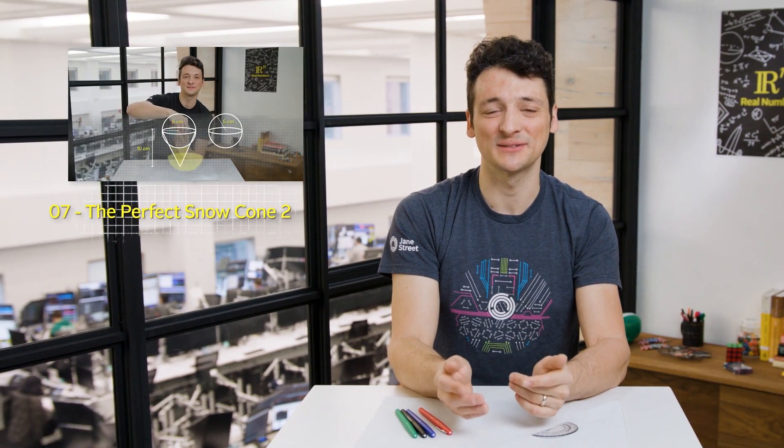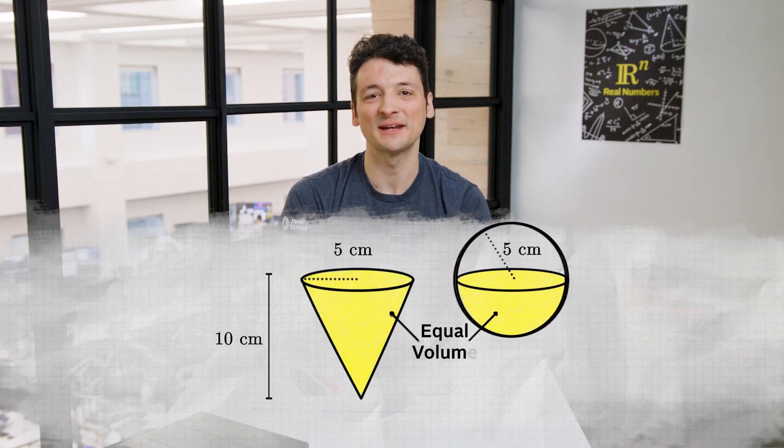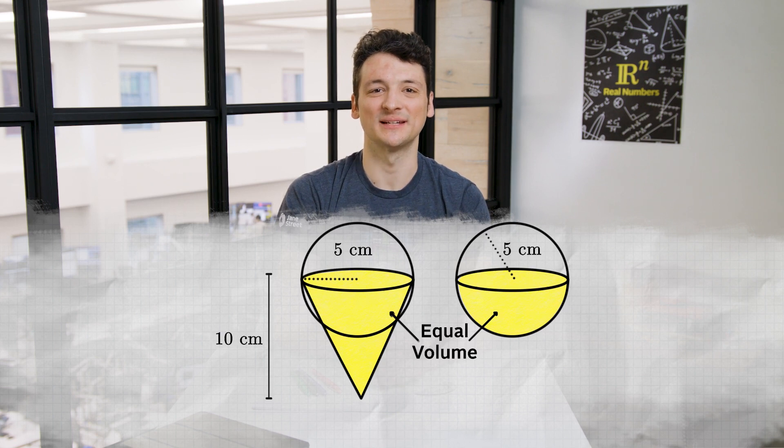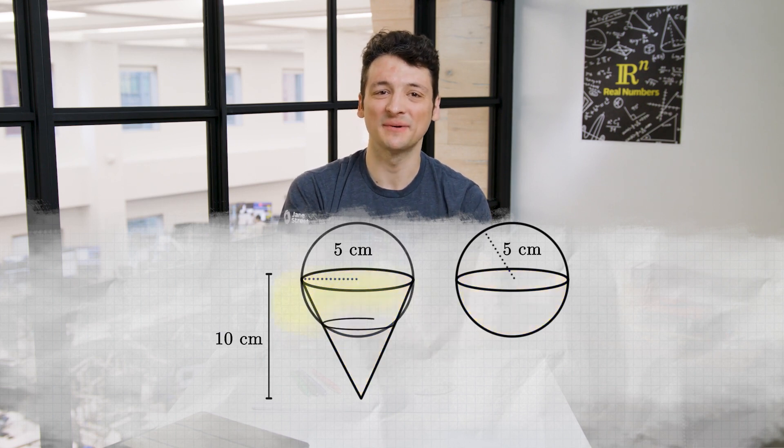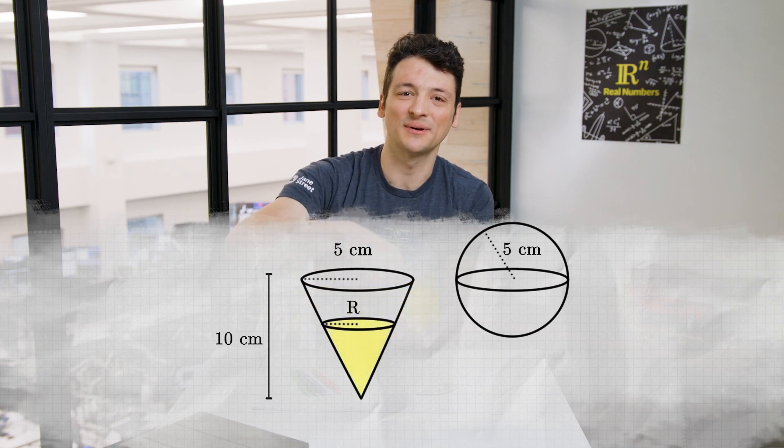Now let's consider last episode's problem. If you haven't seen that episode yet, there is a link in the description of this video. We were packing our newly designed snow cone, which had a radius 5 cm and height 10 cm, by reshaping a 5 cm radius hemisphere of slush into it. The question, what is the radius at the bottom of the slush that must be scraped off the side of the hemisphere and packed into the point of the snow cone holder?